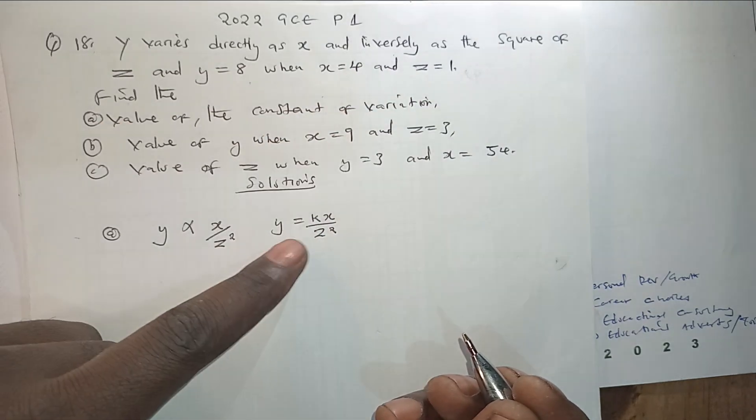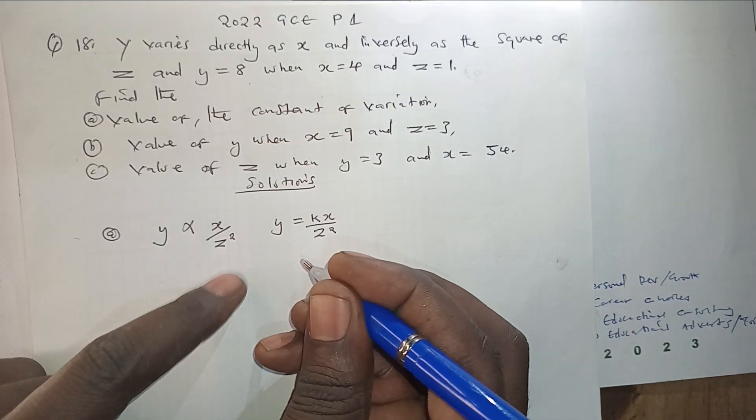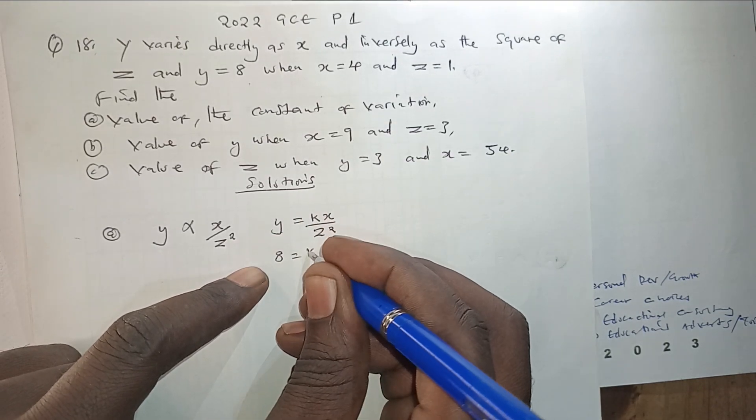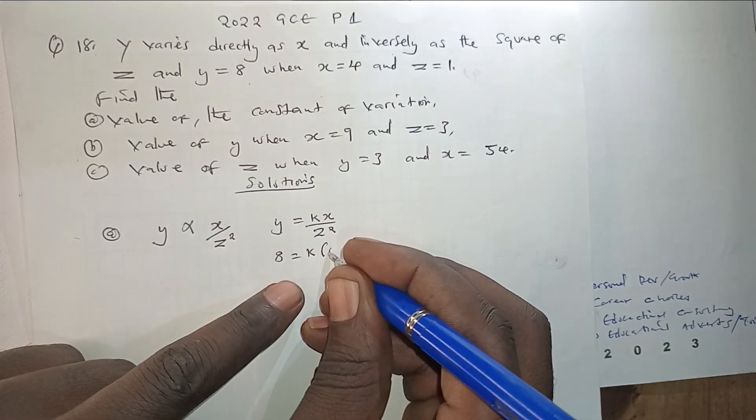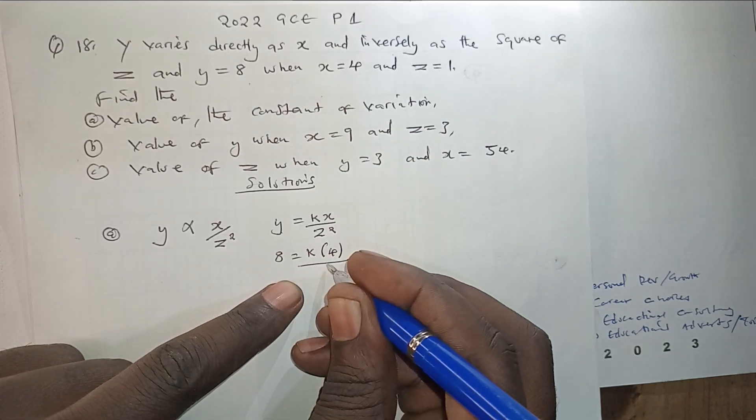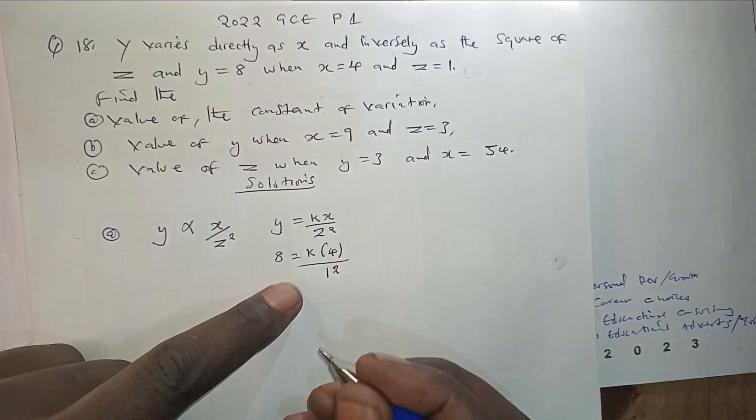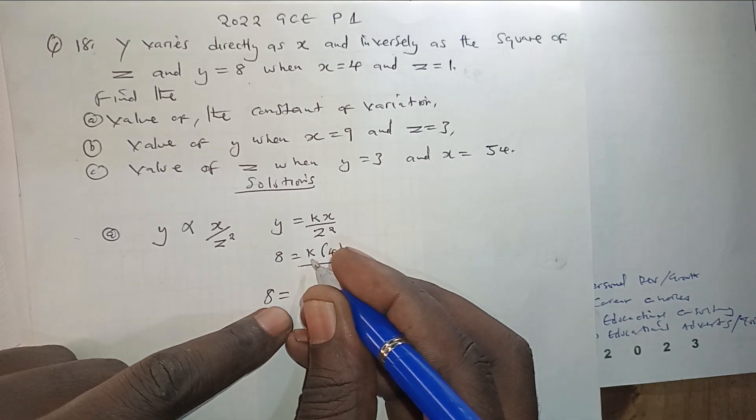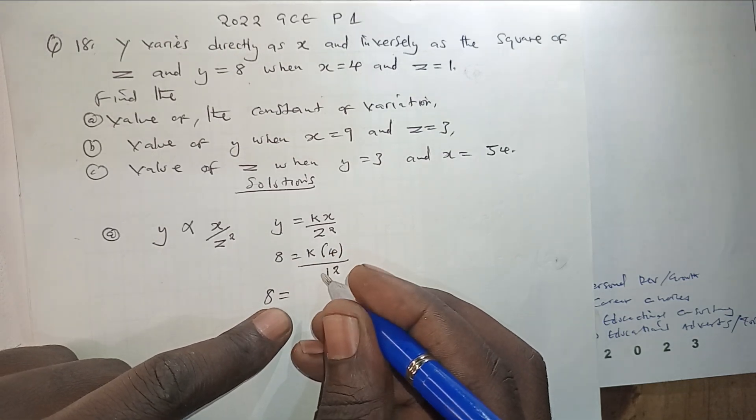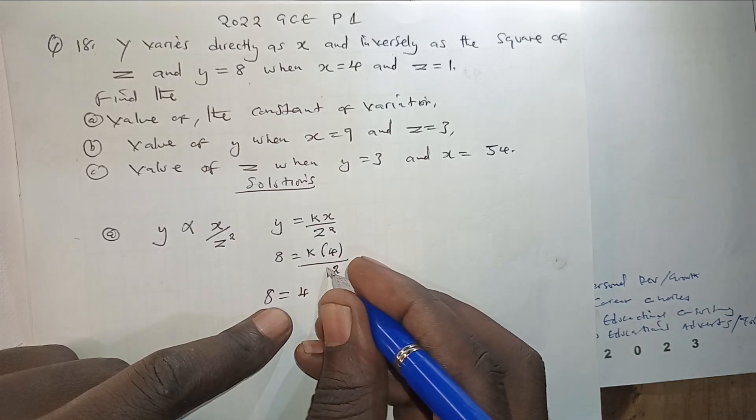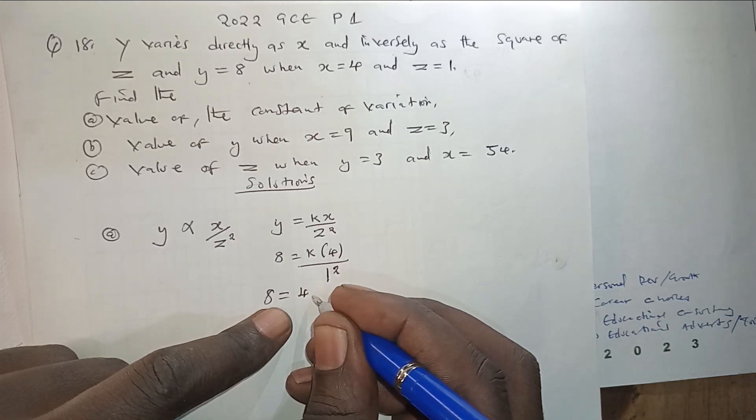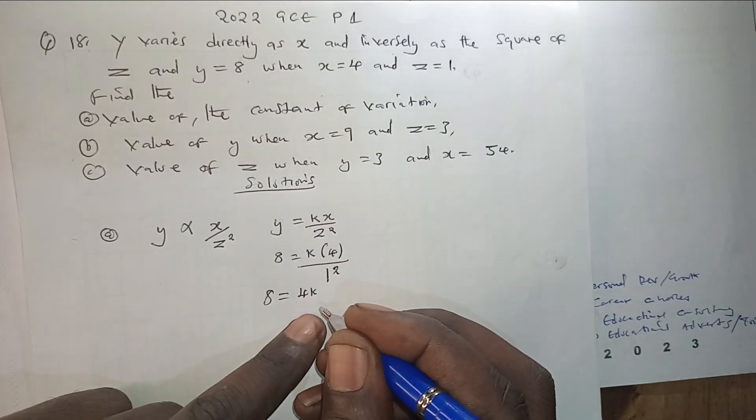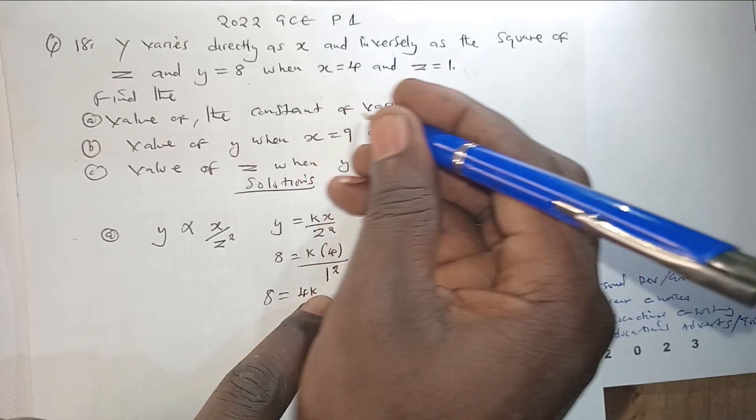So I'm going to substitute. We've been told Y equals 8, so we are going to have 8 for Y equals K is going to be maintained, then X we are going to have a 4 over Z equals 1. So we are going to have 1 squared. And this shall be 8 equals K times 4, that is 4K. 1 squared is simply 1. So this is what we are going to get.